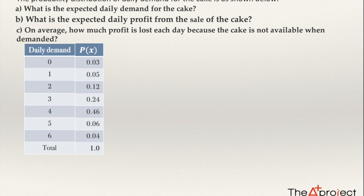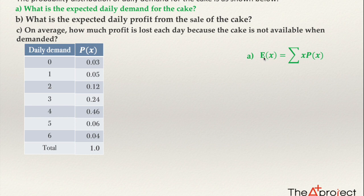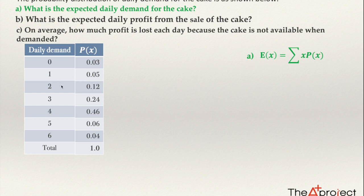However, the bakery only stocks every day with four cakes — we have only four cakes at the beginning. So for question A, what is the expected daily demand for the cakes? The formula I'm going to use is the expected value formula. The expected value is the sum of each value multiplied by its probability. So the demand could be zero and the probability of zero is 0.03, so I'm going to multiply 0 times 0.03, then 1 times 0.05, et cetera.